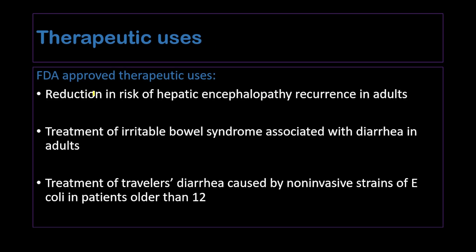Regarding therapeutic uses, Rifaximin is FDA approved for reduction in the risk of hepatic encephalopathy recurrence in adult patients. Hepatic encephalopathy occurs from hyperammonemia resulting from the liver's failure to detoxify ammonia coming from the intestine. The ammonia is produced by bacteria in the intestine, and Rifaximin works to eliminate these bacteria and reduce ammonia levels, thereby reducing the risk of hepatic encephalopathy.